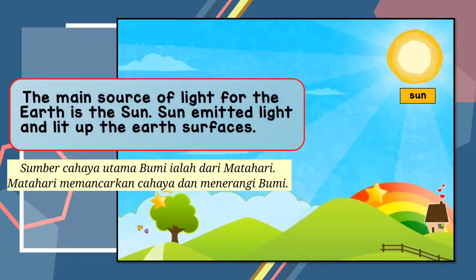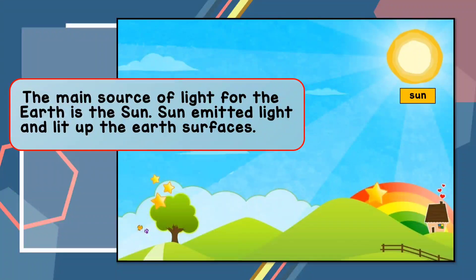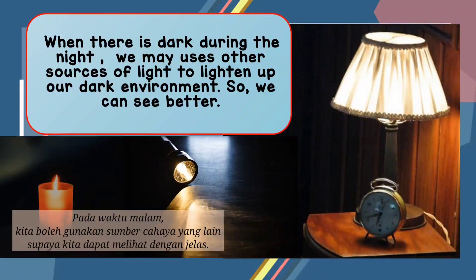The main source of light for the earth is the sun. The sun emits light and lights up the earth's surfaces. When it is dark during the night, we may use other sources of light to lighten up our dark environment so we can see better.